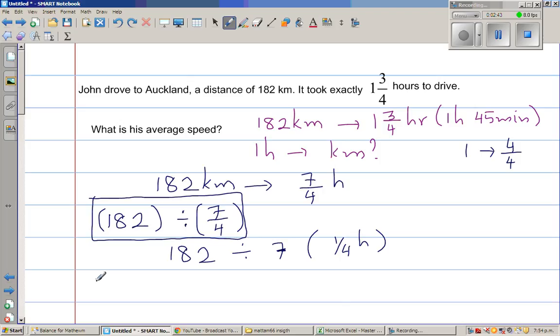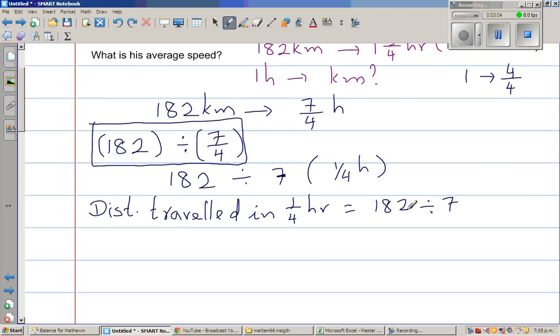So I will write like this. Distance traveled in quarter hour would be 182 divided by seven. I don't like to use calculator until it is absolutely necessary. So I don't know how to divide 182 by seven. So I am going to say this is 182. Can I write this is 140 plus 42 divided by seven.